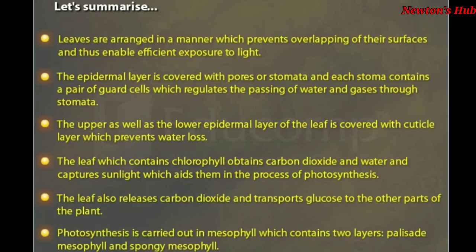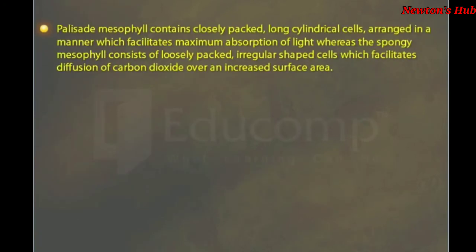Photosynthesis is carried out in mesophyll which contains two layers: palisade mesophyll and spongy mesophyll. Palisade mesophyll contains closely packed long cylindrical cells arranged in a manner which facilitates maximum absorption of light. Whereas the spongy mesophyll consists of loosely packed irregular shaped cells which facilitates diffusion of carbon dioxide over an increased surface area.